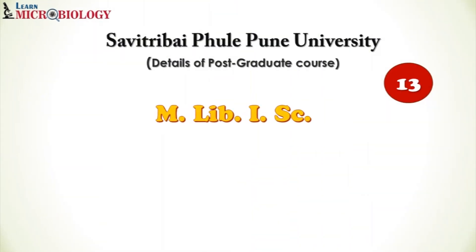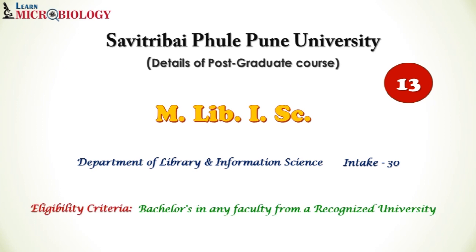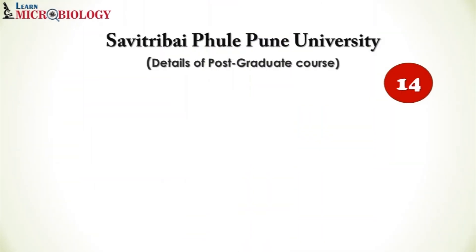Course number thirteen is Masters in Library Science and Information Science. There are a few courses you can do if you want to shift your stream, and this is one of them. It is offered by the Department of Library and Information Science with an intake capacity of 30 students. The eligibility criteria is a bachelor's degree in any faculty from a recognized university.